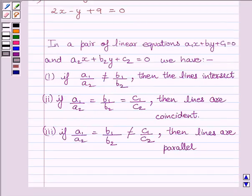First of all, let us understand that in a pair of linear equations a₁x plus b₁y plus c₁ equals 0 and a₂x plus b₂y plus c₂ equals 0, we have: if a₁ upon a₂ is not equal to b₁ upon b₂, then the lines intersect each other.